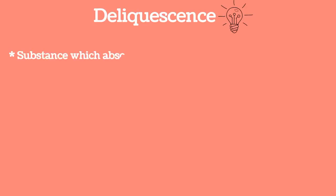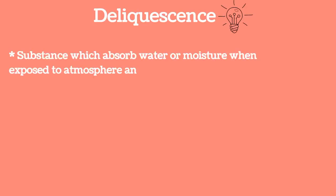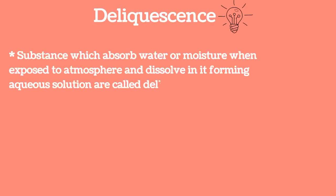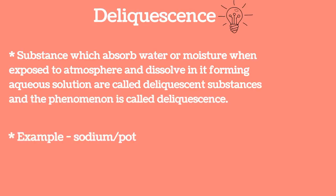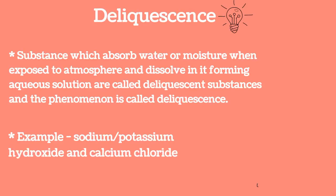Deliquescence: substances which absorb water or moisture when exposed to the atmosphere and dissolve in it, forming an aqueous solution, are called deliquescent substances. This phenomenon is called deliquescence. Examples are sodium hydroxide, potassium hydroxide, and calcium chloride.